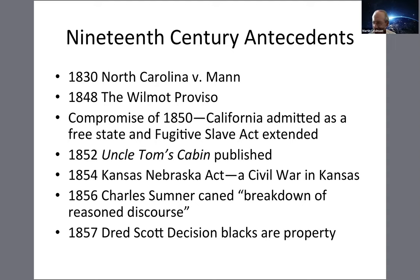Once slaves were here from 1619, slavery slowly became institutionalized. In the 18th century in the South, there was an interesting legal development: Virginia decided that lineage would be passed down from the mother rather than the father. So if a slave owner had a child with a slave, that child — because lineage came from the mother — would be a slave. The system was rigged from the start.